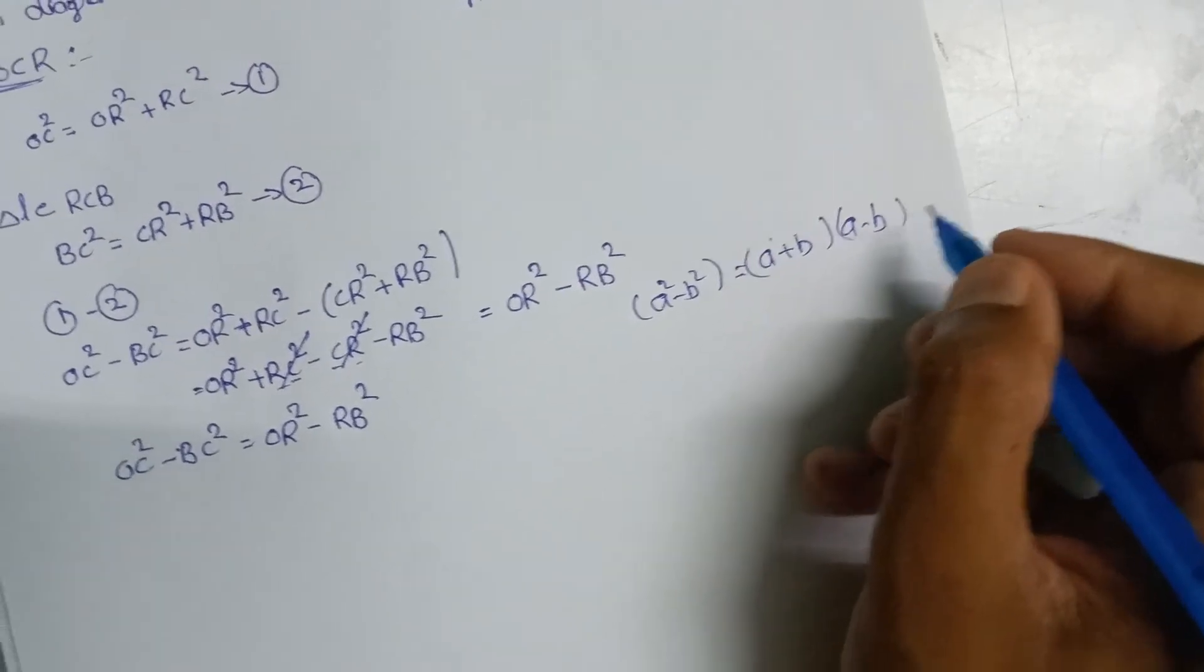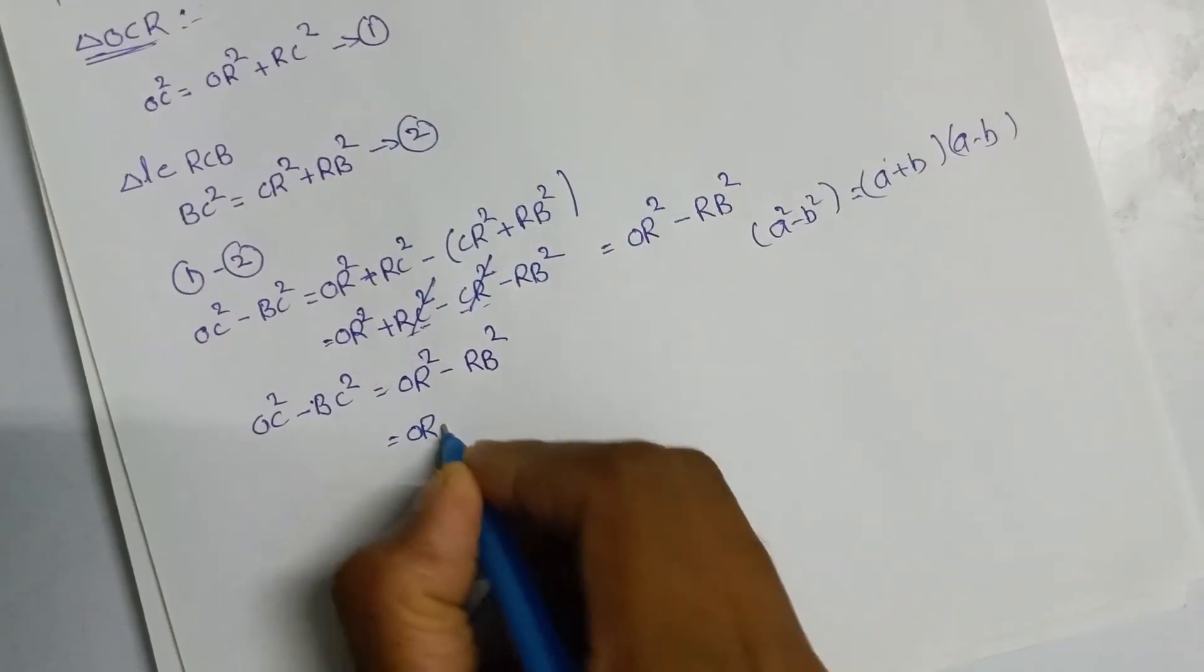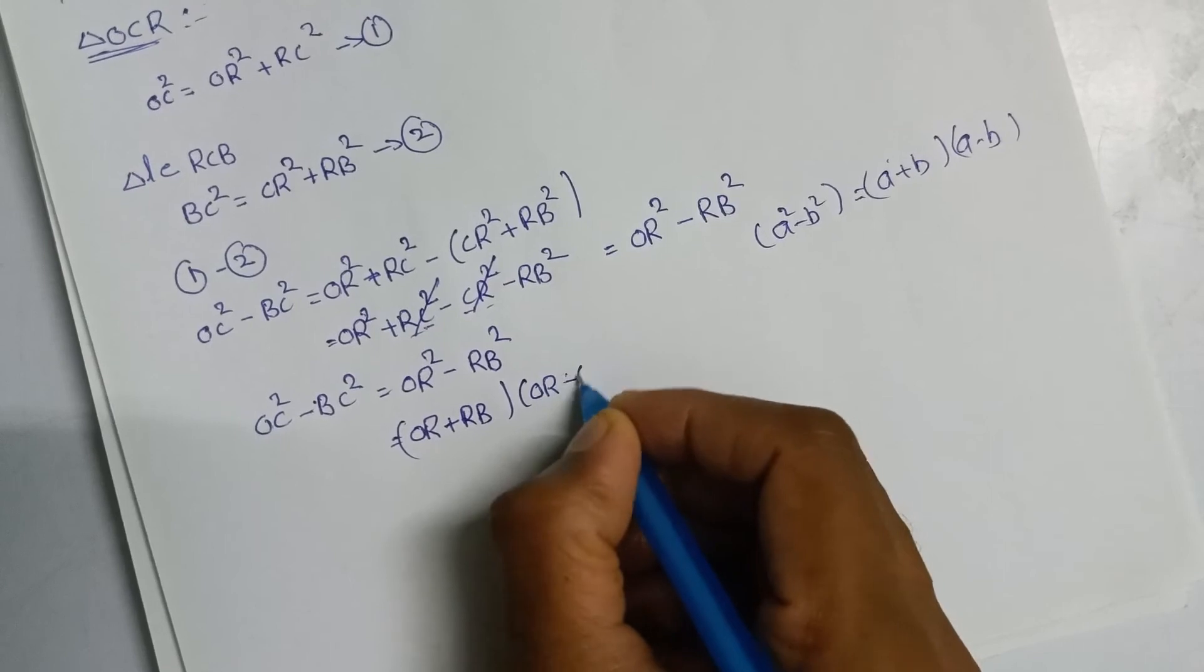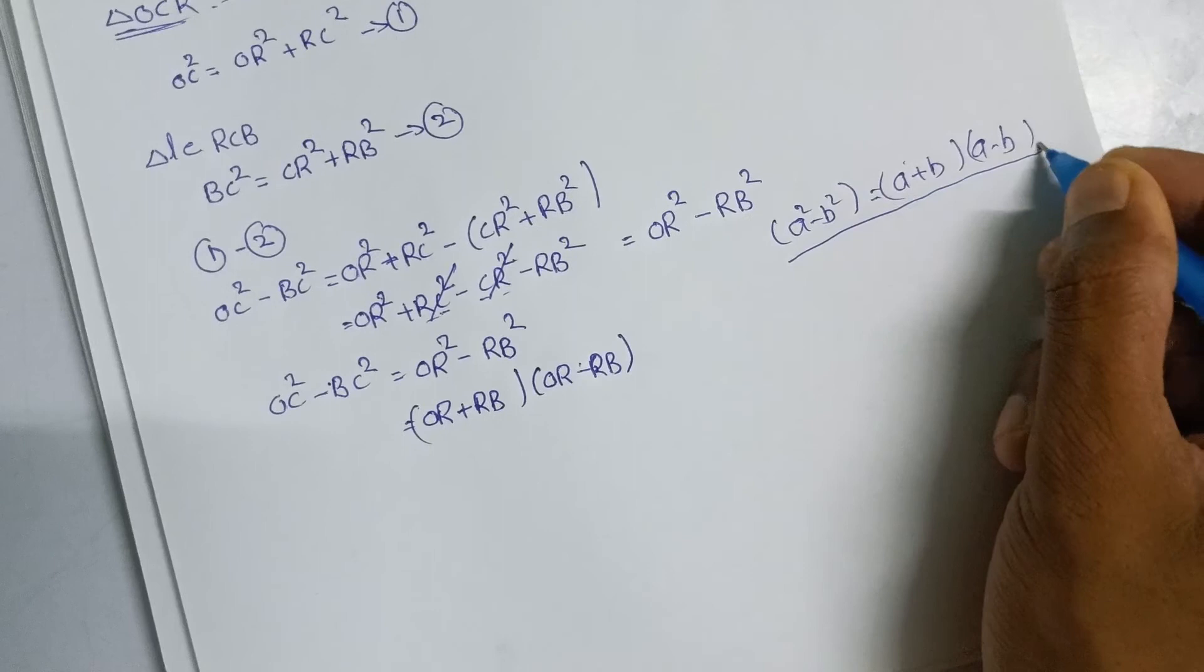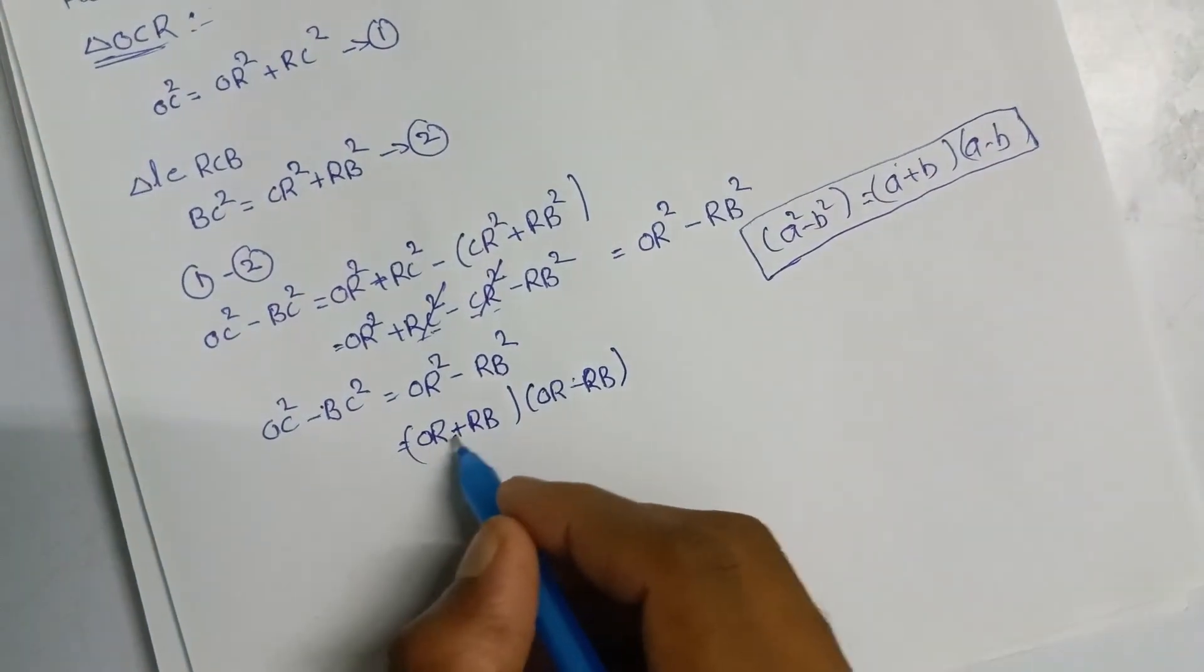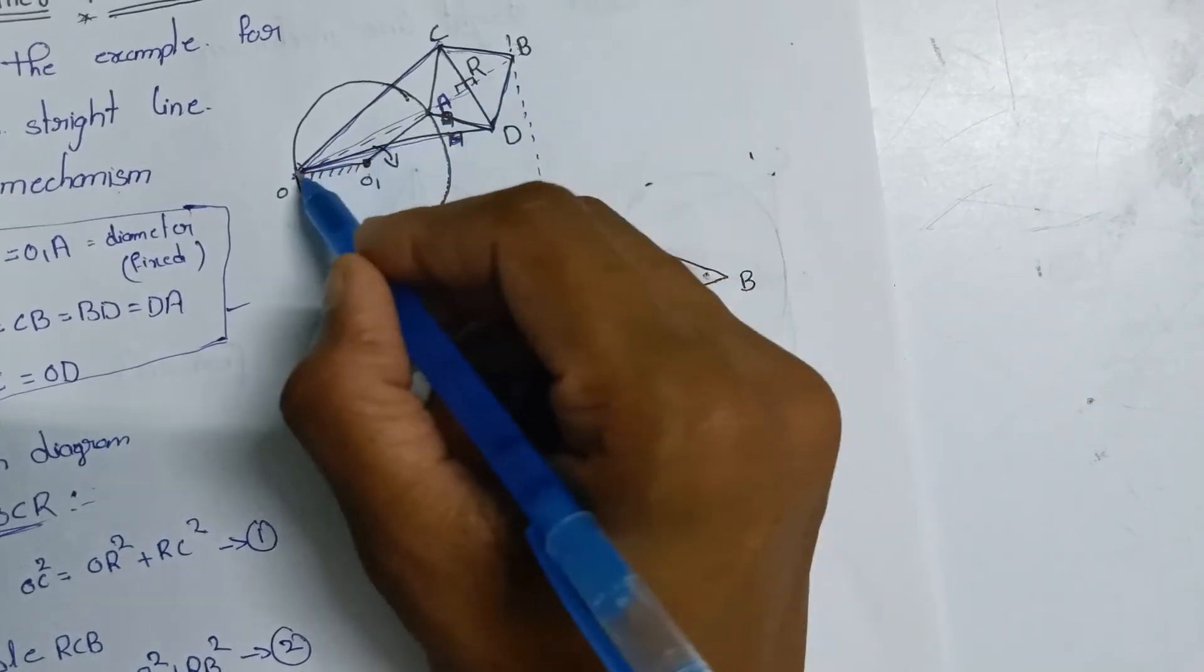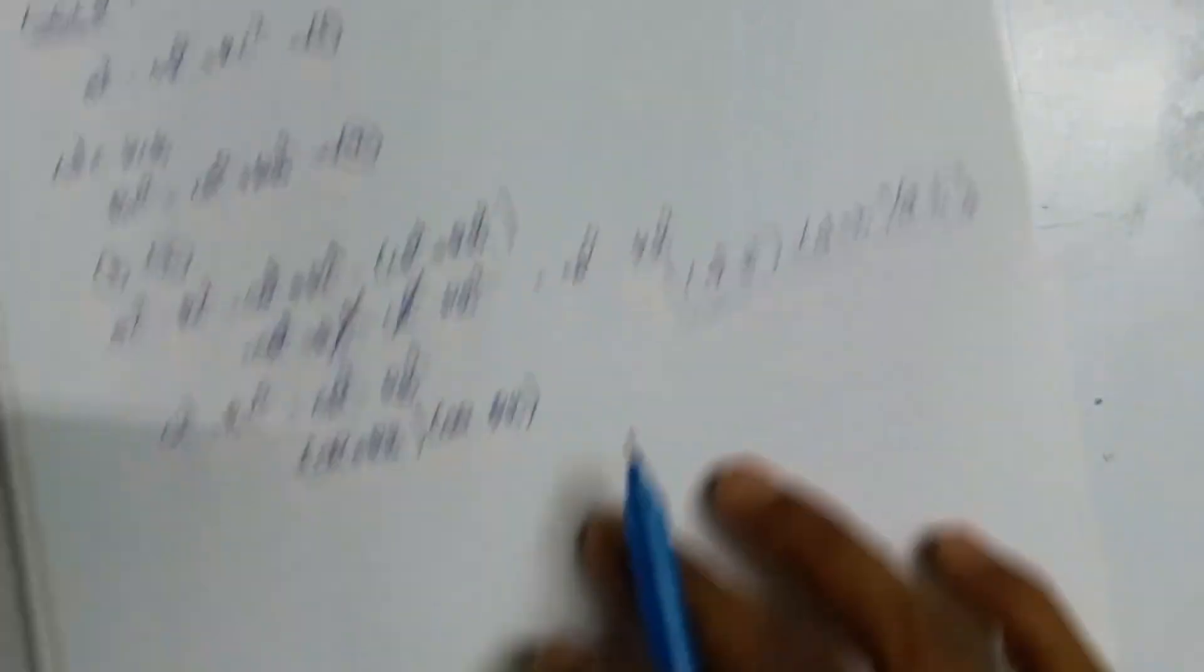Substitute from the diagram: OR plus RB - in the diagram OR plus RB corresponds to OB. So we replace OR plus RB with OB.